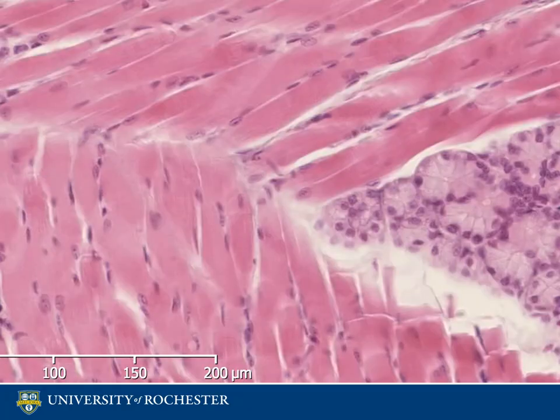Another characteristic of skeletal muscle cells, also known as myofibrils, is that they are cylindrical in shape. In addition, each cell is multinucleated, with these nuclei located primarily on the outer edges of the cell, as seen here.